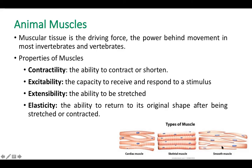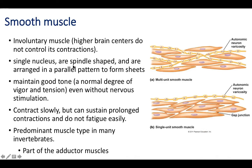Smooth muscles are present in a spindle shape. They have a single nucleus — you can see only one nucleus. They are spindle-shaped and arranged in parallel patterns. They are not controlled by higher centers of the brain; they are involuntary.